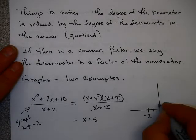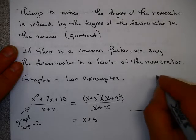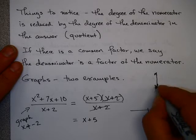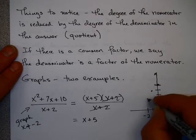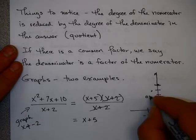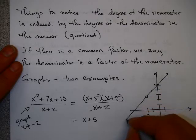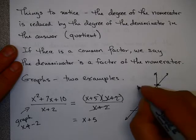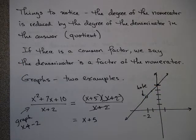Now what that says about the graph is this. This graph of this function is exactly the same as x plus 5, and I'm just going to draw x plus 5 in here. The only problem is when you would get to negative 2, you can't have a value. So what that means is you literally have a hole in the graph right here. You have a hole where the value for x equals negative 2 could be.